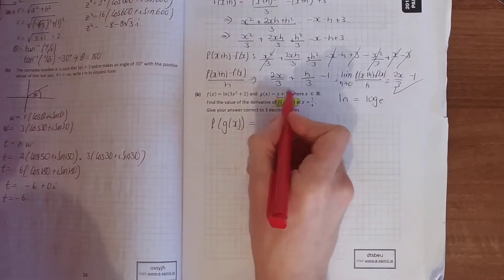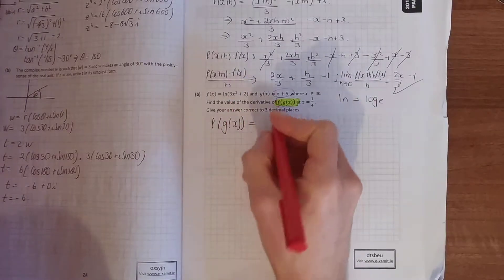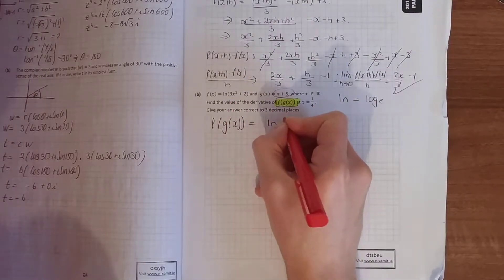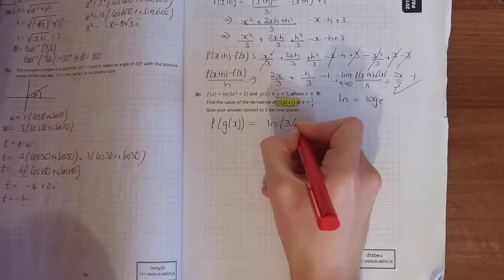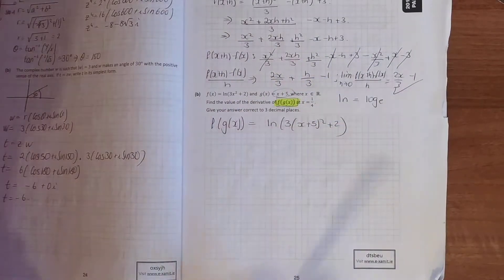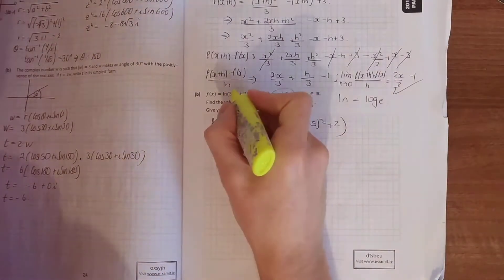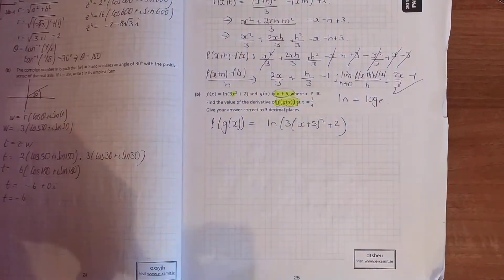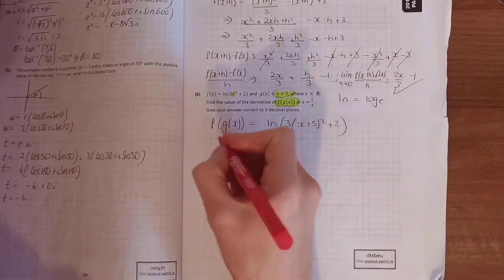Put g(x) in in place for f. So, f(g(x)). So, put g(x), which is x plus 5, in instead of x there. So, ln(3 times (x + 5) squared plus 2). Everywhere I see x, I've set in x plus 5. Tidy that up.